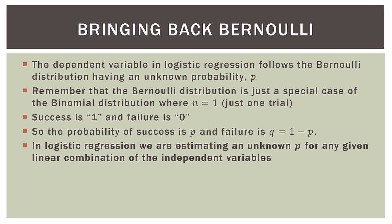In logistic regression, we are estimating an unknown probability p for any given linear combination of the independent variables. In the sleep apnea example, if I weighed 175 pounds, we could estimate the probability that I would have sleep apnea based on the data. In the home mortgage example, if I walk into the bank with a 735 credit score, I could use our model to estimate the probability that I would be approved for a mortgage. On the dependent variable side we have probabilities, and somehow we have to tie those two things together.